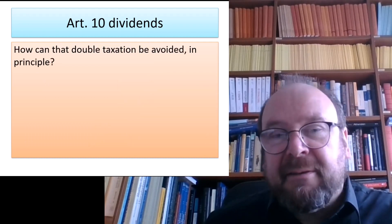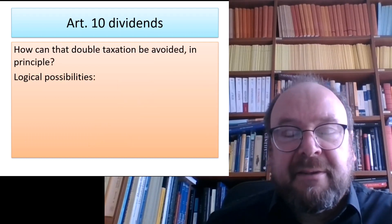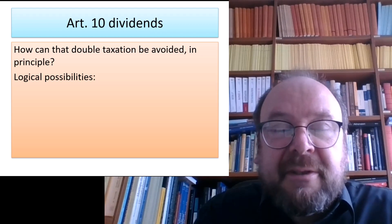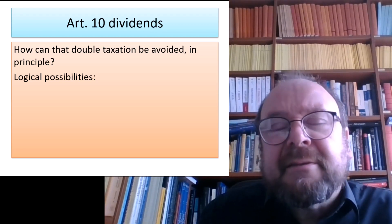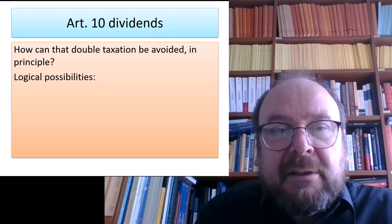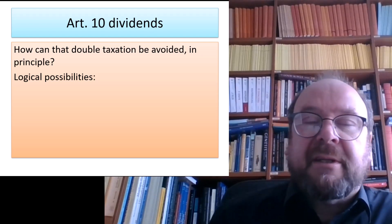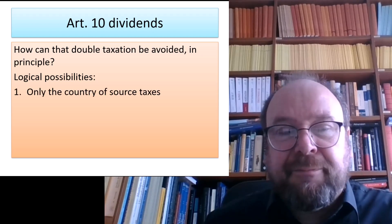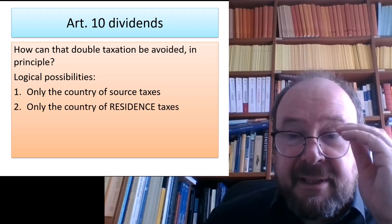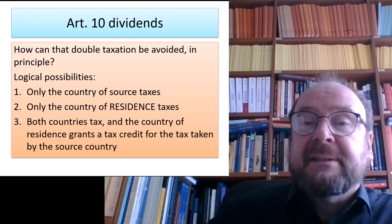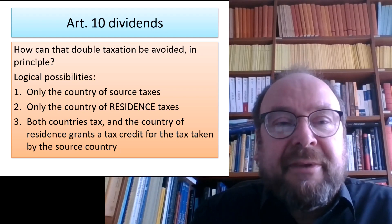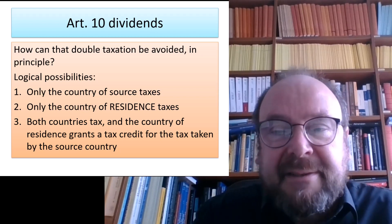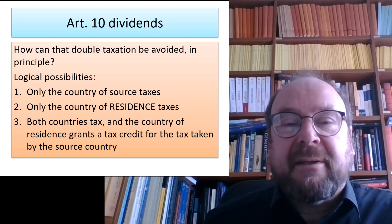How can that double taxation be avoided? One of the two states involved will have to cut back its claim on the tax, either fully or partly. The logical possibilities are: only the source state taxes the dividend; or only the country of residence taxes the dividend; or both tax the dividend but both cut down their claims a bit so that in total a tolerable total burden remains.